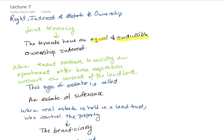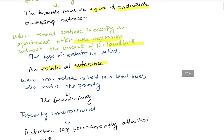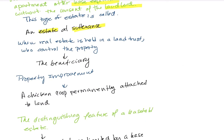When a tenant continues to occupy an apartment after the expiration of the lease without the consent of the landlord, that is a tenancy at sufferance. We associate no payment and no authorization with that — it's an estate at sufferance.